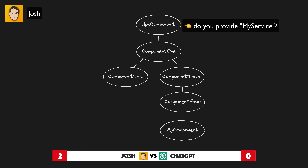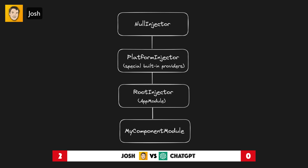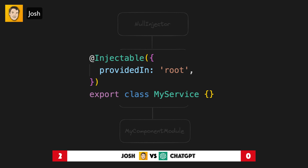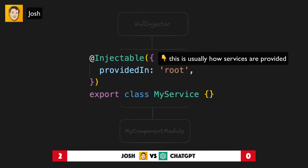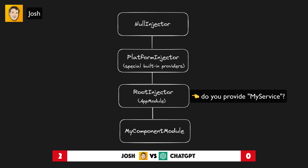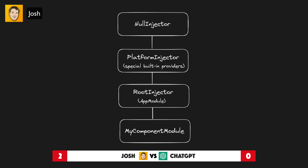It all starts with the element injector tree, which directly reflects the application's component tree. When Angular sees that a dependency is being injected, it will first look to the component's own providers. If none are specified, Angular will start going up the element injector tree to find a provider for the token — checking the parent component, and if not found, continuing up the component tree all the way to the root component. If no provider is still found, the module injector tree comes into play, dealing with providers defined in NgModules or supplied using the provided-in property of the injectable decorator. If the token can't be resolved through this entire process, we reach the null injector, which will cause an error.